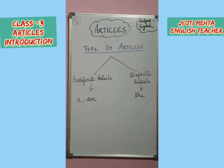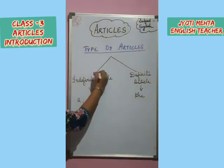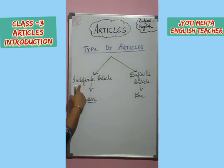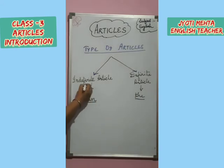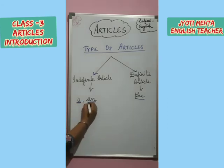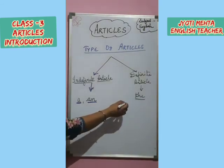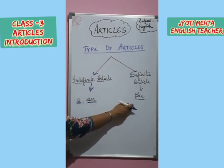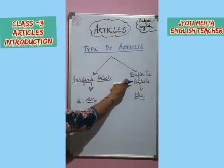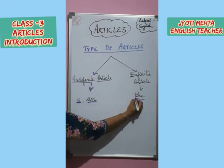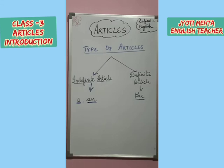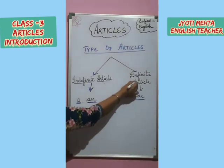So children, there are two types of articles. First is indefinite article. And second is definite article. A and an are indefinite articles. The is a definite article. The words a and an are called indefinite articles because these words do not point out any definite person or thing. That's why they are called indefinite articles. The next article is 'the' — it is called definite article because it points out some particular person or thing. That's why 'the' is a definite article.